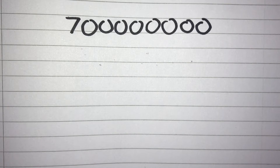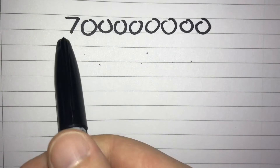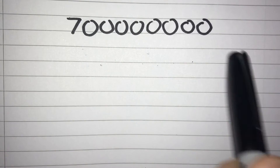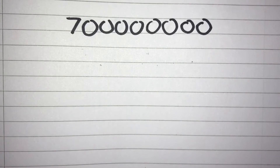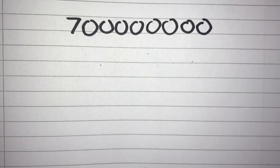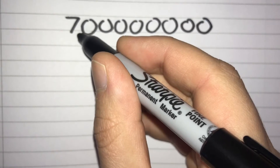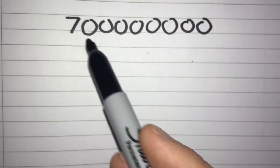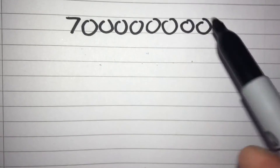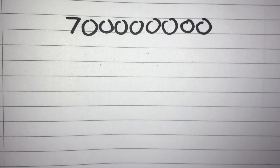We've got to first of all find a number between 1 and 10 out of this big number here. To do that we simply put our decimal point after our first significant figure. In this case it would go after this 7, so we get 7.000000, but we could of course just write this as 7.